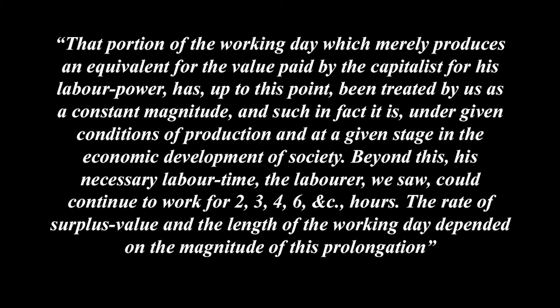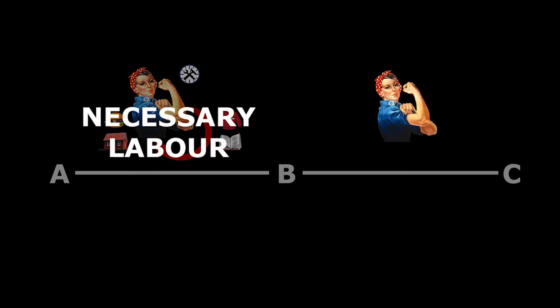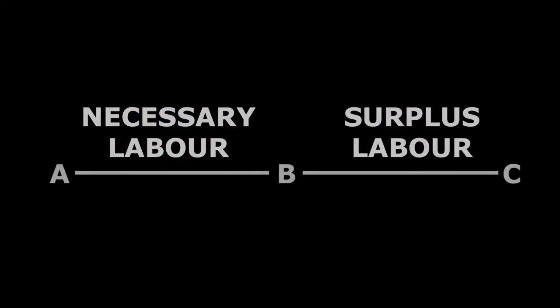That portion of the working day which merely produces an equivalent for the value paid by a capitalist for his labour power has up to this point been treated by us as a constant magnitude, and such in fact it is under given conditions of production and at a given stage in the economic development of society. Beyond this is necessary labour time — the labourer could continue to work for two, three, four, six etc. hours. The rate of surplus value and the length of the working day depended on the magnitude of this prolongation. In part three we saw how the working day is essentially split into two sections which Marx represented on a line from A to B and B to C — that part where the labourer is reproducing their own labour power or necessary labour, and that part where they are producing surplus value for the capitalist or surplus labour.